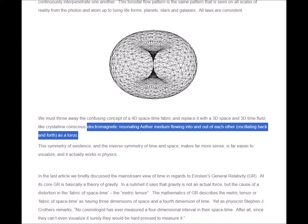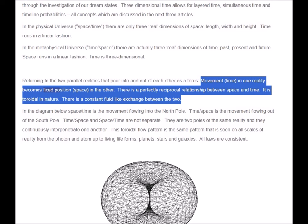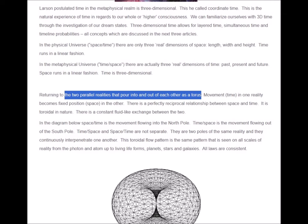Larson postulated that time in the metaphysical realm was three-dimensional, dubbing it coordinate time—a fluid-like electromagnetic resonating ether flowing into and out of each other, oscillating back and forth just as a torus. Movement or time in one reality becomes fixed position or space in the other. Hence there is a perfectly reciprocal relationship between space and time, as there is a constant fluid light exchange between the two.